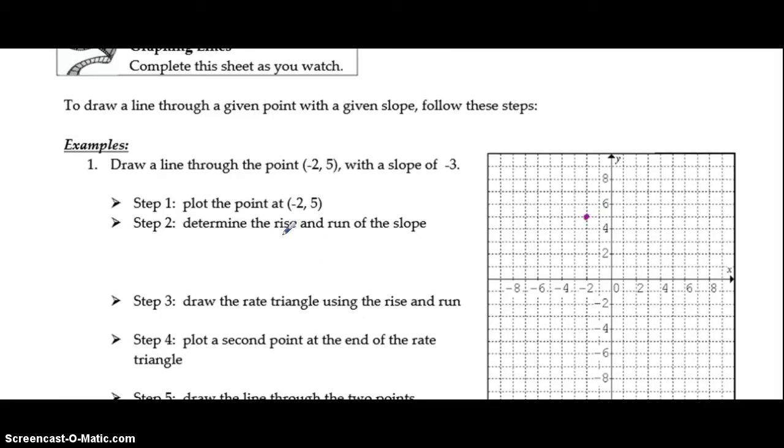Next, we need to know the rise and the run of our slope. In this particular case, our slope is an integer value. So we're going to make it a fraction, which means we're going to put it over 1. This will help us identify the rise as well as the run.